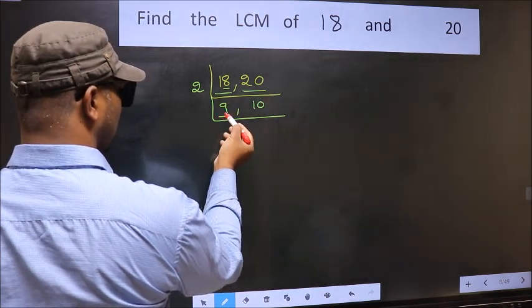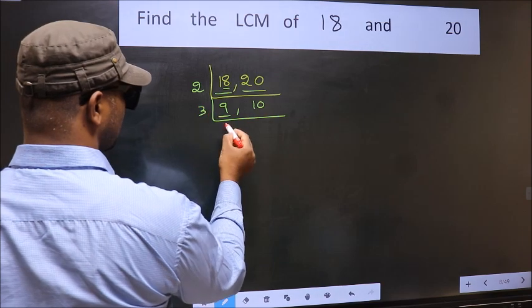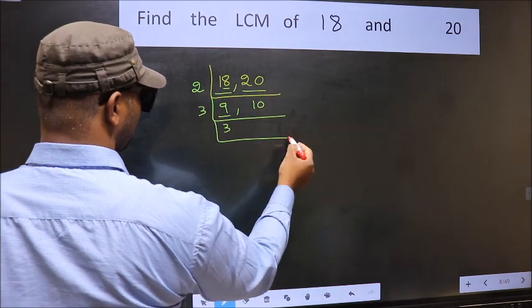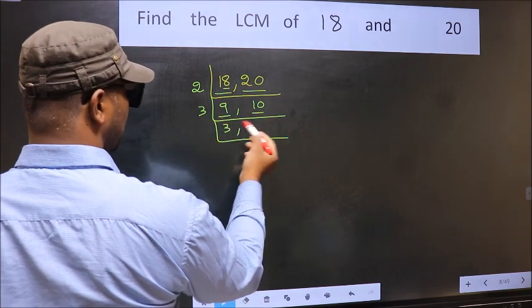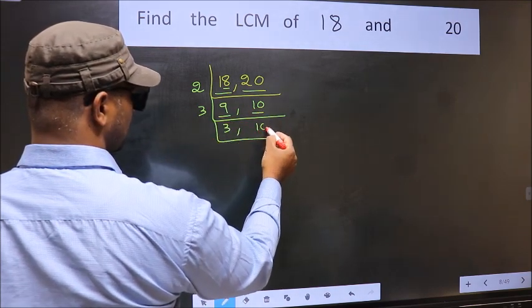Now here we have 9. 9 is 3, 3 is 9. The other number 10 is not divisible by 3 so we write it down as it is.